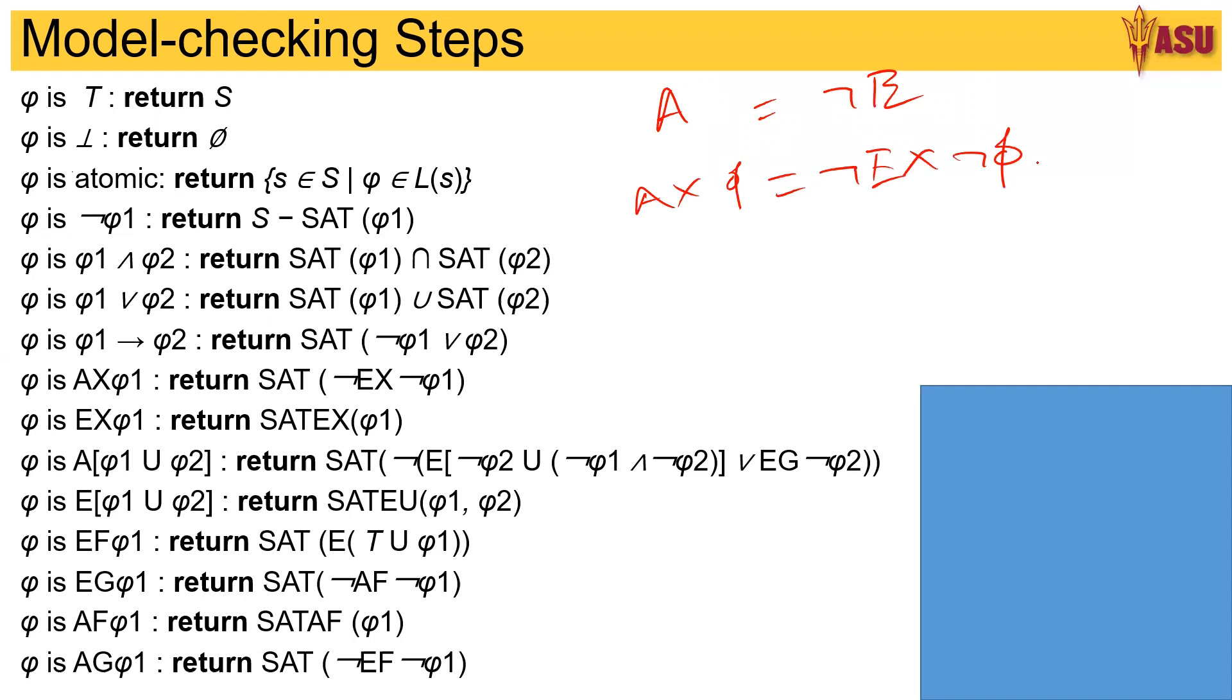If ¬φ does not exist in any path, then it means φ exists in all the paths. That's how we are going to use it.